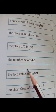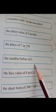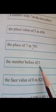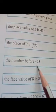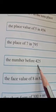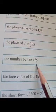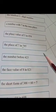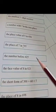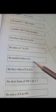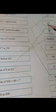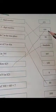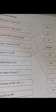Next one — the number before four hundred and twenty-five. What is this number, children? Four hundred and twenty-five. The after number is four hundred and twenty-six. The before number is four hundred and twenty-four. You are having four hundred and twenty-four. Match it, children.